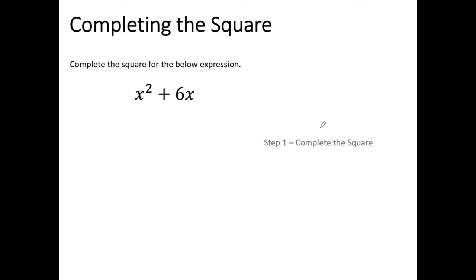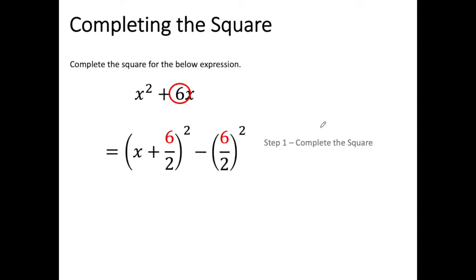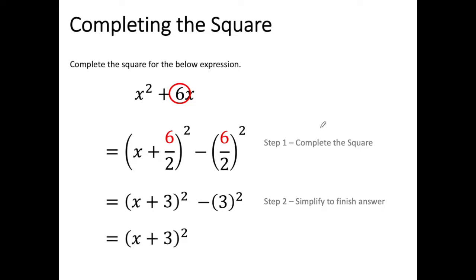The first step is to write it and complete the square. My b value is going to be 6, so I put it in: x plus 6 over 2 in brackets, squared, minus 6 over 2 squared. I have completed the square, but I need to simplify. Since 6 divided by 2 equals 3, I can write x plus 3 squared minus 3 squared. And 3 squared is 9, so I write it as x plus 3 squared minus 9. That has completed the square for x squared plus 6x.